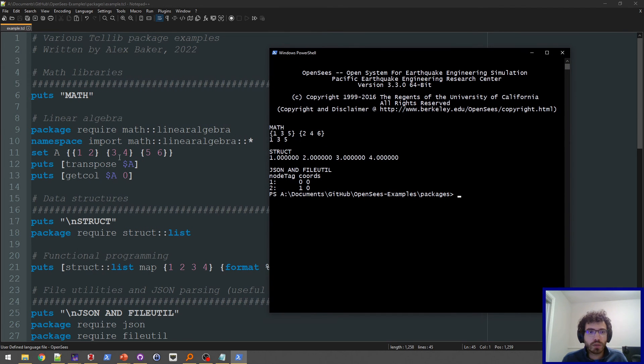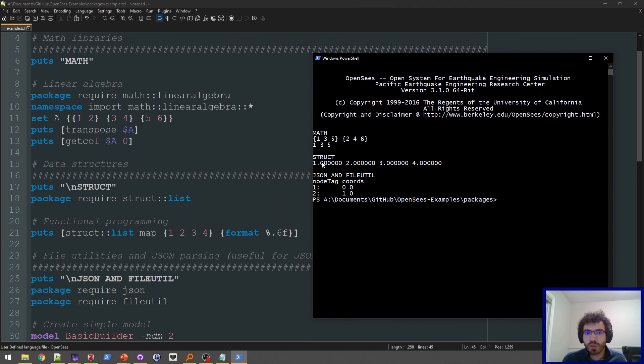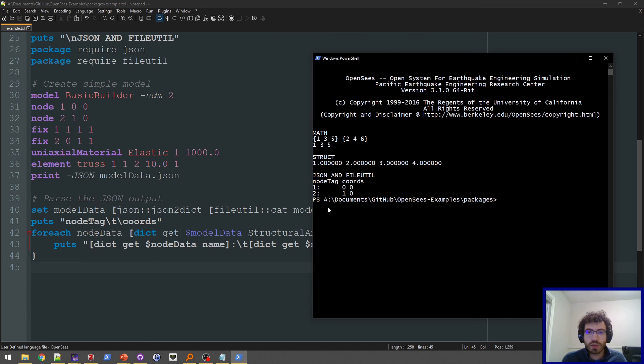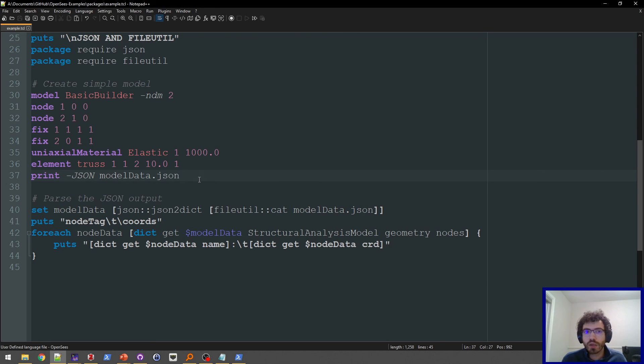And so as you can see, I transposed this matrix, so the rows became the columns. I can get a column from that matrix. I formatted one, two, three, four into floating point with six decimals. And I was able to access the node information from the JSON file from the OpenSees analysis. So that's about it for this example.